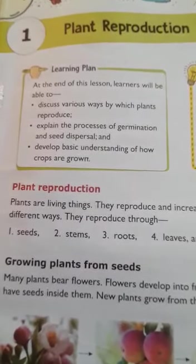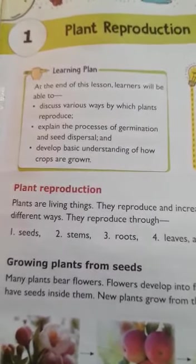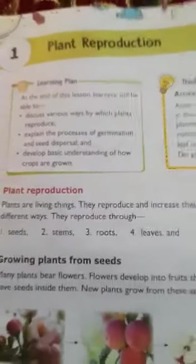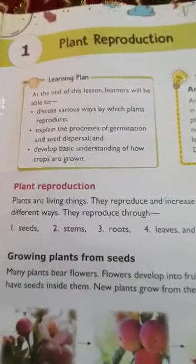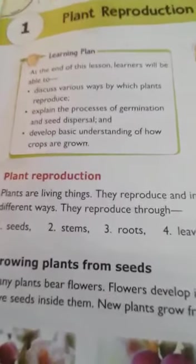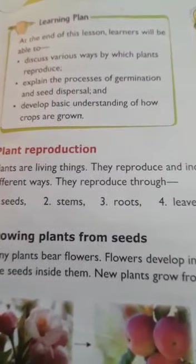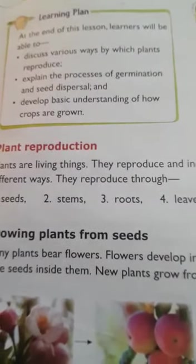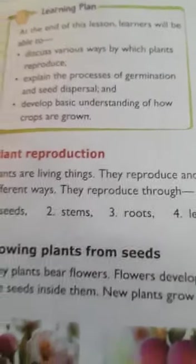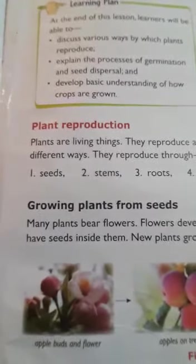In this lesson we will see how plants, as living things, reproduce. At the end of this chapter, you will be able to discuss various ways by which plants reproduce, and you will be able to explain the process of germination and seed dispersal. Let's start our lesson: plant reproduction.